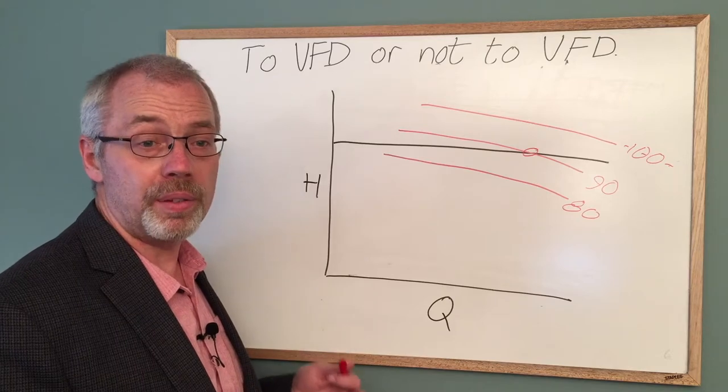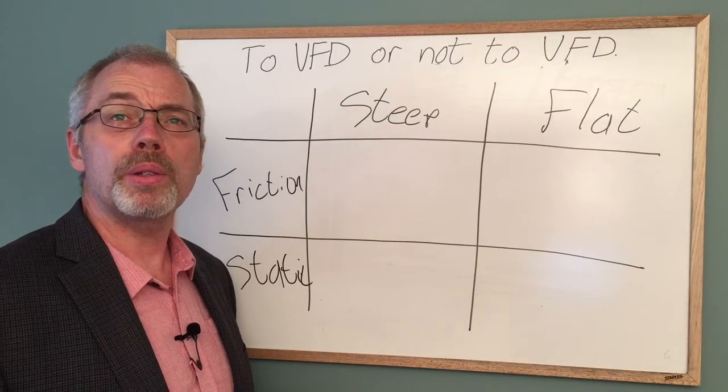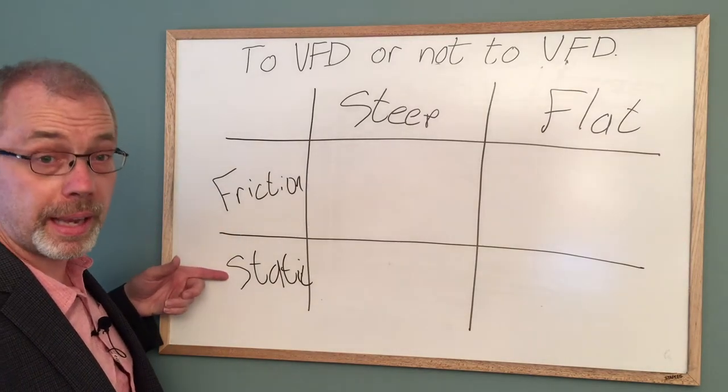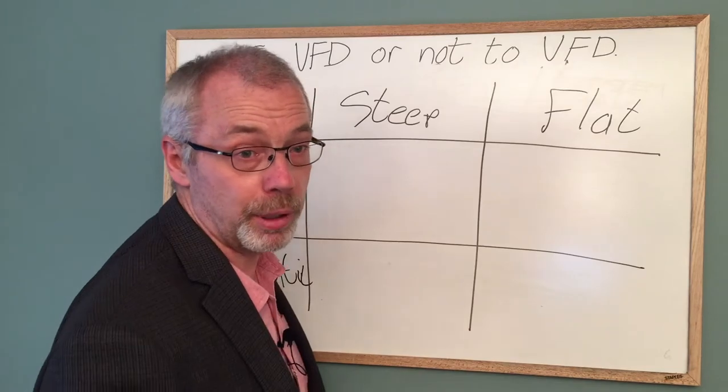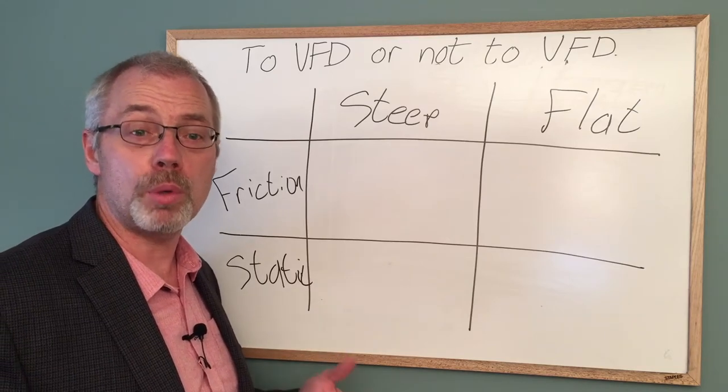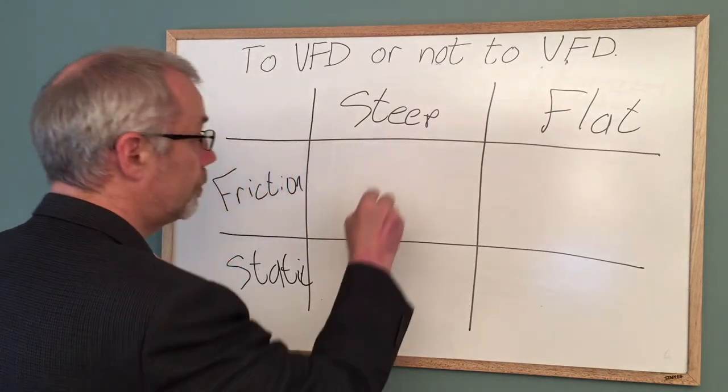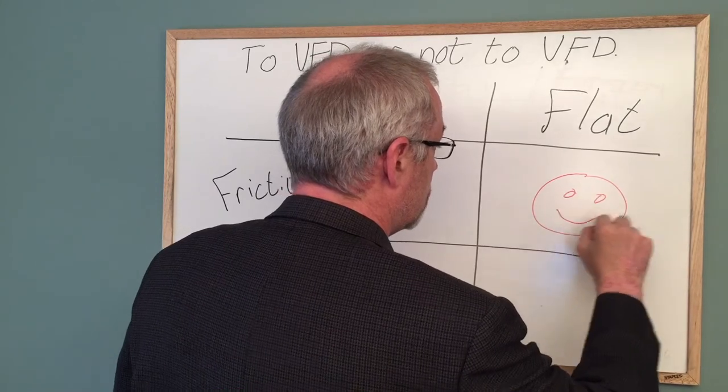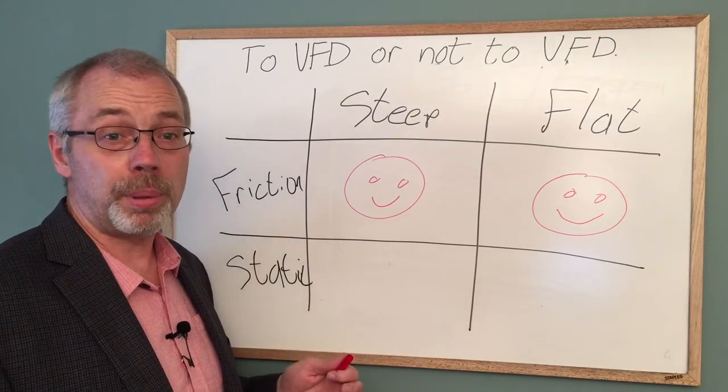We can summarize our findings with a table. The two rows are for a friction dominated system and for a static head dominated system. The two columns are for a steep pump curve and a flat pump curve. Our explanation has shown that a variable frequency drive may be a great fit for a system dominated by friction with little static head rise. Typically this is the pipeline application. A static head system and a steep pump curve may be acceptable.